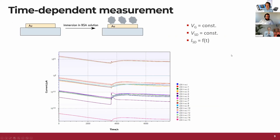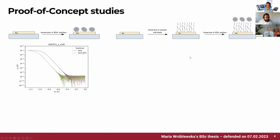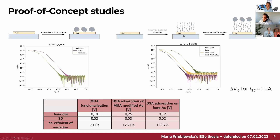Question: what thiol chemical are you using and what is the chain length? This refers to the proof-of-concept studies. My bachelor student Maria was using MUA — mercapto-undecanoic acid — which has 11 carbons and a COOH group at one end, with a thiol at the other end that bonds to the gold surface.